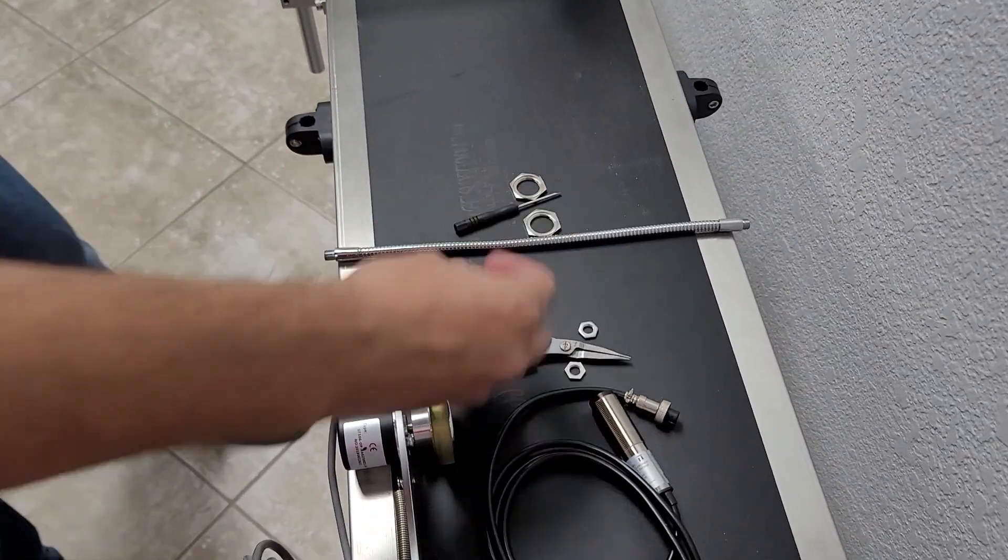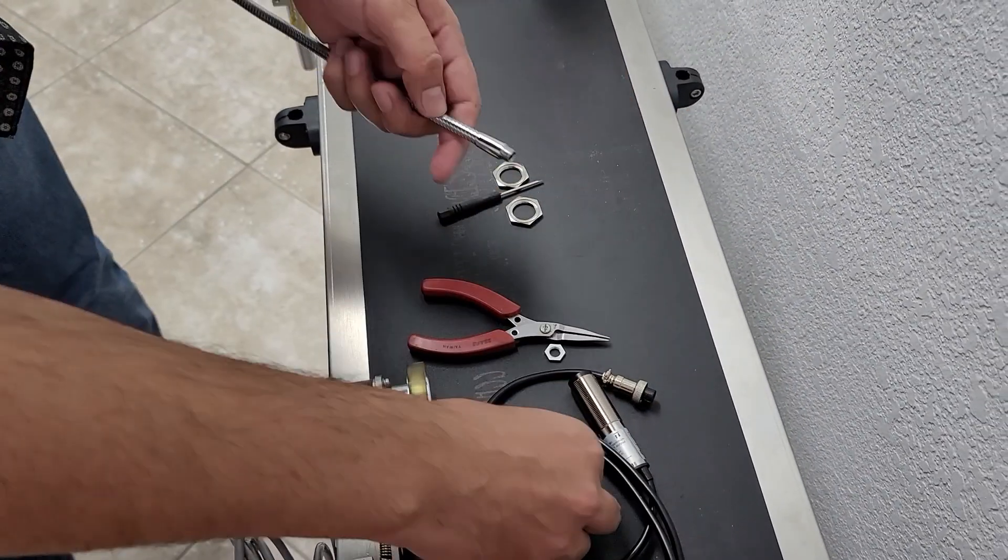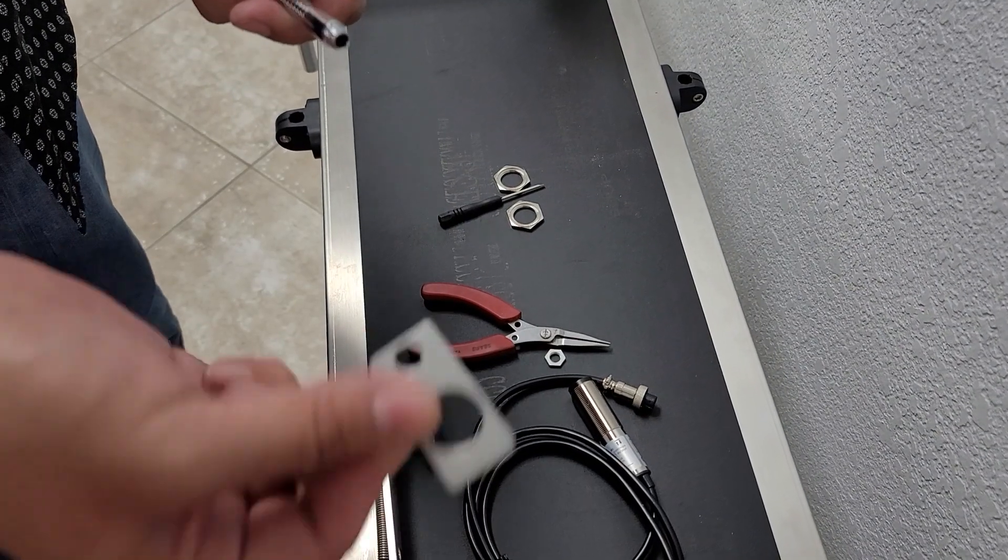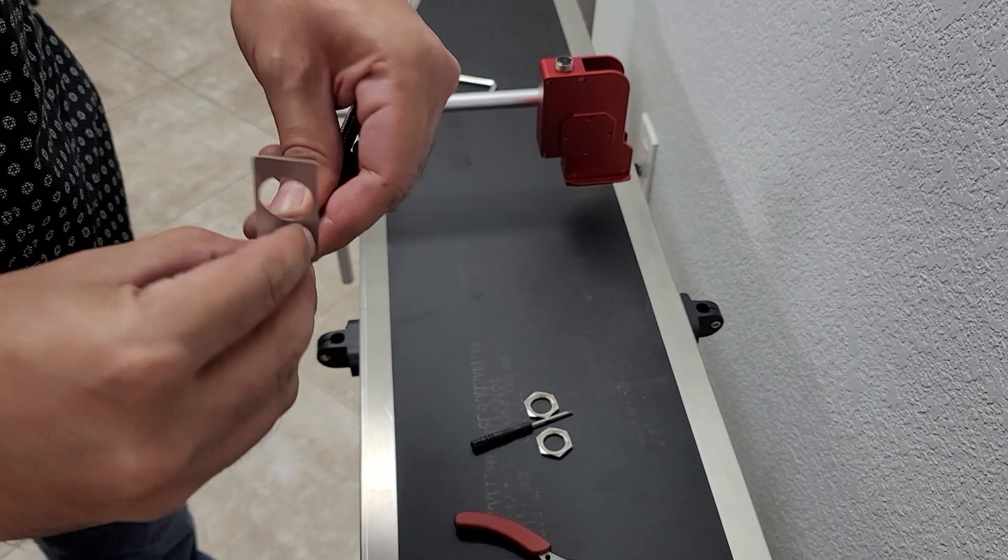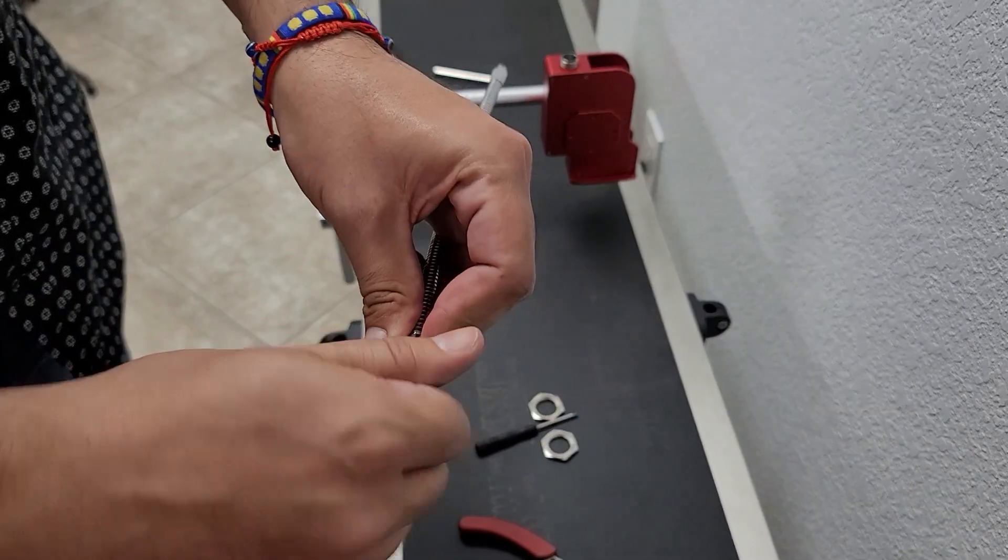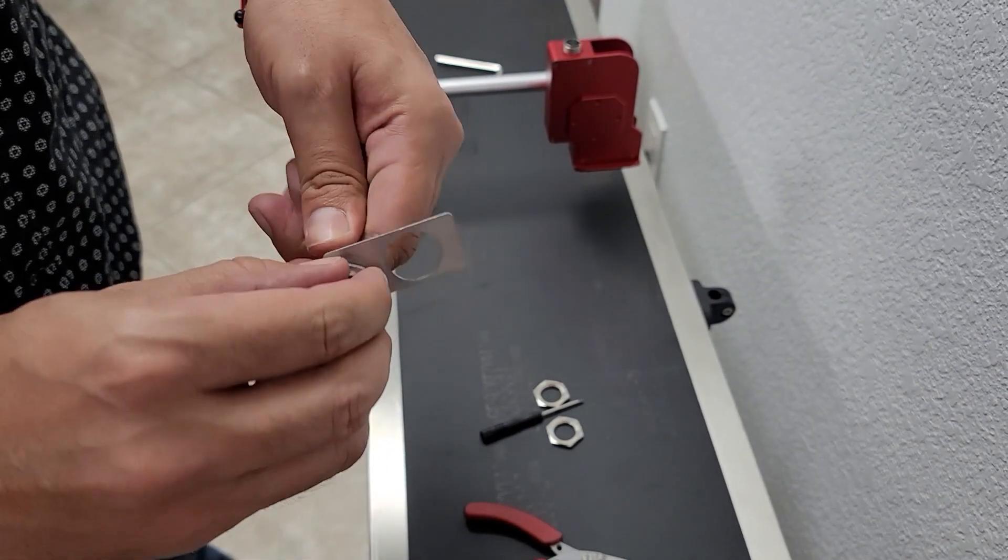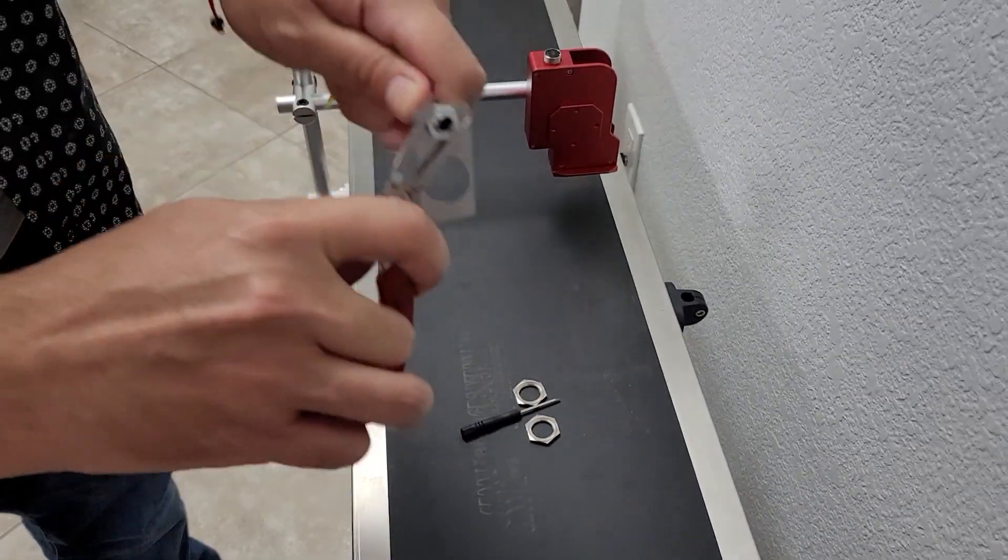And now with this one, we have to mount the sensor onto the flexible arm. So you can take this piece here and take this small nut here and attach it to the flexible arm. Use your little needle nose pliers to tighten that up.